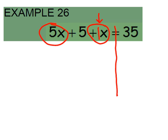So now 5x and 1x are going to make 6x and then I have this plus 5 which doesn't have anything to combine with so we can bring it down.